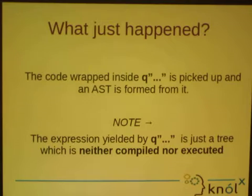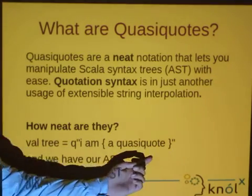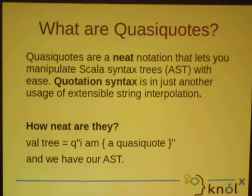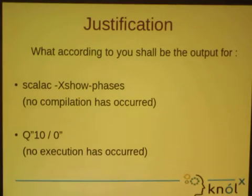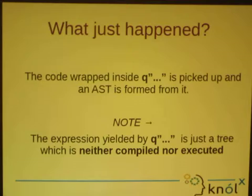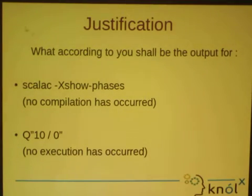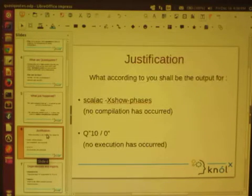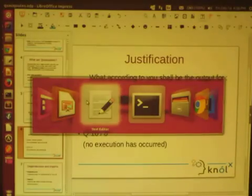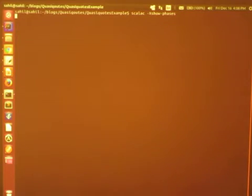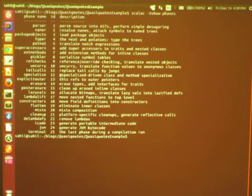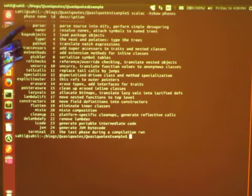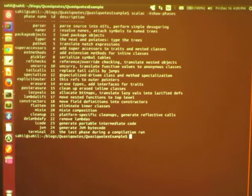This is a very important statement and I'll be justifying it. Basically, inside the Q, there is an expression which is grammatically correct according to the grammar of Scala. To justify that it is neither compiled nor executed, that can be verified using a command. This command basically shows all the phases of the compiler that are undergone while the compilation process takes place. As you can see, the first phase is the parser.